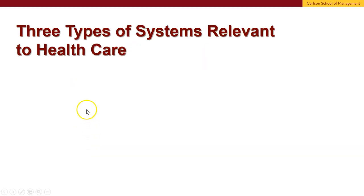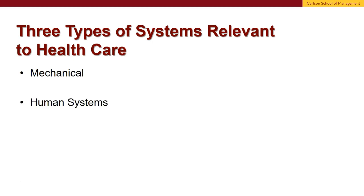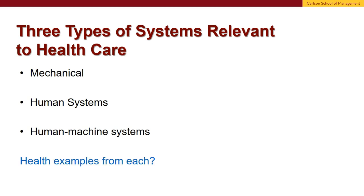There are three types of systems relevant to health care, and we're still in systems theory. First is mechanical systems. Second would be human systems. And then finally the interaction — the human-machine systems. For each one of these, you should start thinking about what kind of health examples there might be.